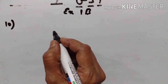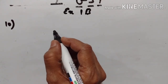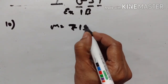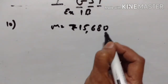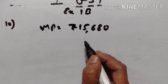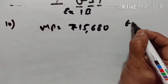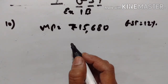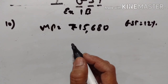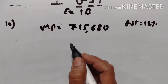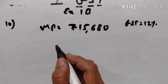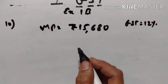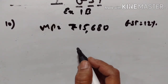For a trader, the marked price of a refrigerator is Rs.15,680, exclusive of GST. GST is equal to 12%. Gagan, a customer for this refrigerator, asked the trader to reduce the price to such an extent that its reduced price plus GST is equal to the marked price. Find the required reduction.